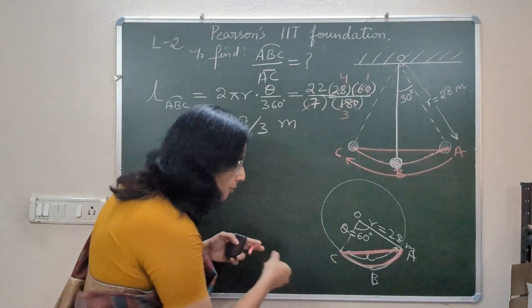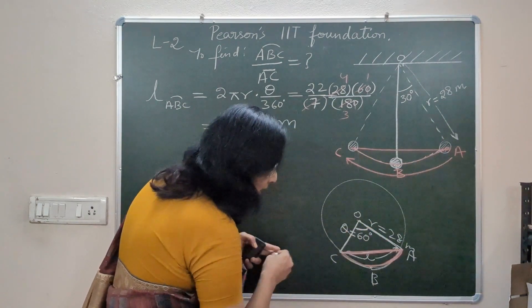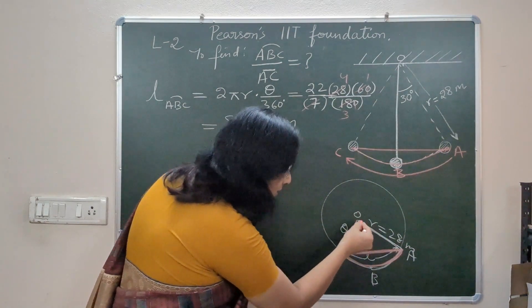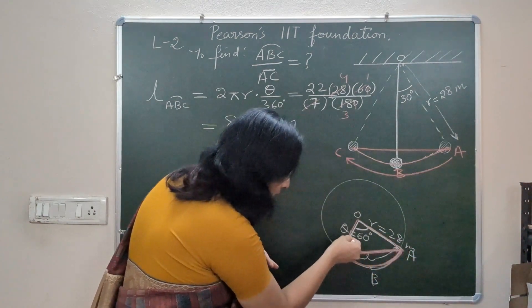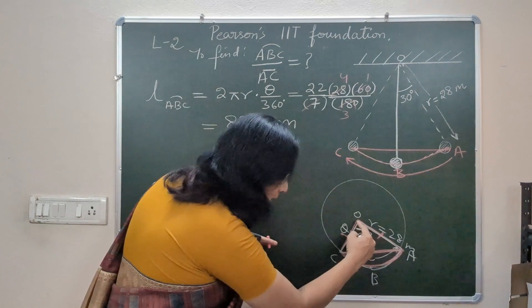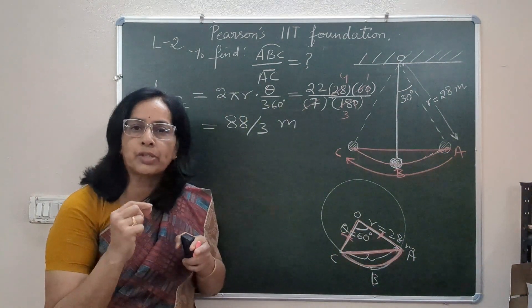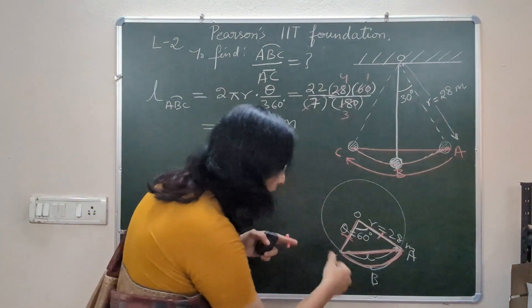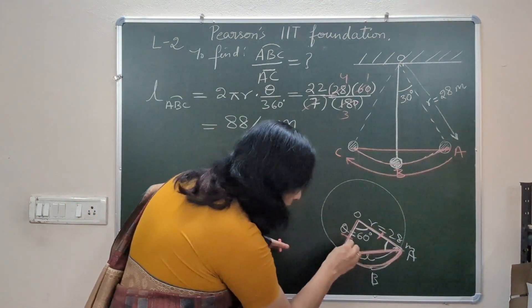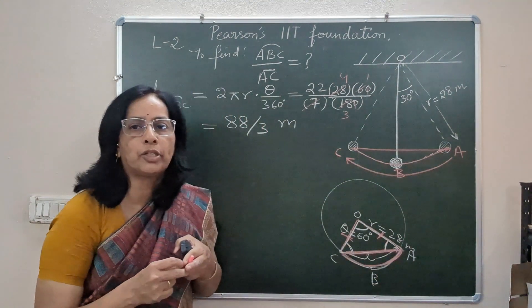Now observe this triangle. In this triangle this is 60 degrees. OC is a radius, OA is also radius, which means these two are equal. If these two are equal then triangle OAC is an isosceles triangle. If it is isosceles, these two angles are equal. Equal sides have equal angles opposite to them.